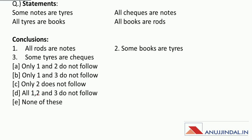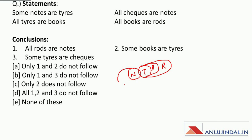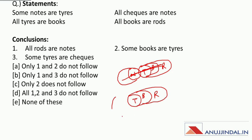Next question has four statements and three conclusions. Let us draw the Venn diagram first. All tires are books, all books are rods, some notes are tires, and all checks are notes. So here, the small circle is checks, and the larger circle is notes.